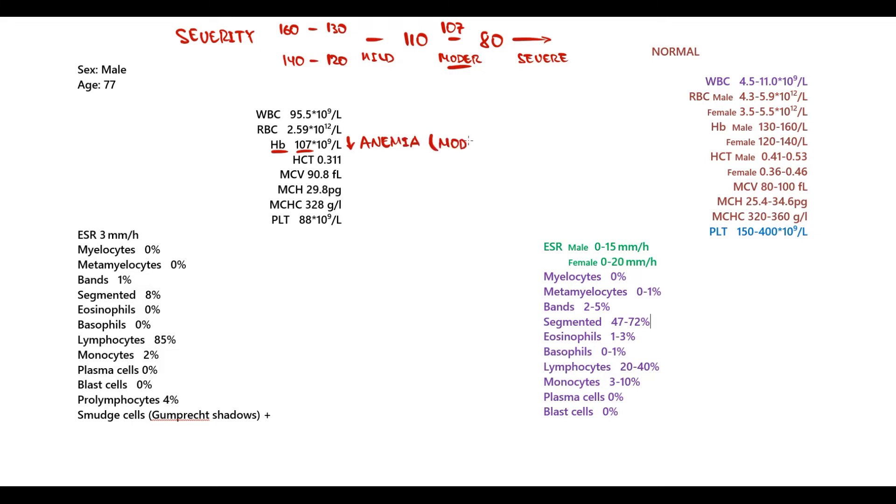The type of anemia according to size of red blood cells is determined by MCV. Red blood cells with MCV between 80 and 100 are called normocytic, greater than 100 macrocytic, and less than 80 microcytic. In this case, MCV is 90.8, so it's normocytic. It's moderate normocytic anemia.